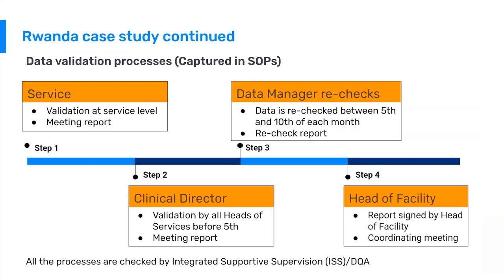The next step is at the clinical director level, where the clinical director validates the data submitted by all the heads providing services and again submits a meeting report. The third step is that the data manager rechecks the data — this happens between the fifth and the tenth of the month — where the data manager reviews the submitted data and reaches out to clinical directors and service leads to address any data quality issues found.